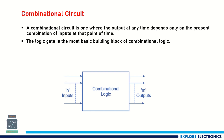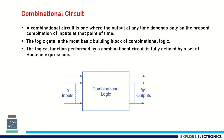The main building block of combinational logic or a combinational circuit is logic gates. We use logic gates to construct the circuit. The logical function performed by the circuit is fully defined by a set of Boolean expressions. Depending on those expressions, the logic is evaluated.